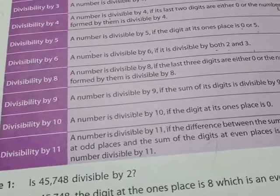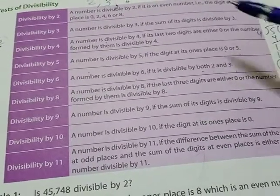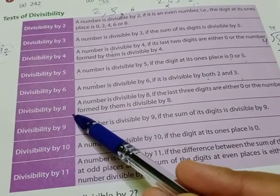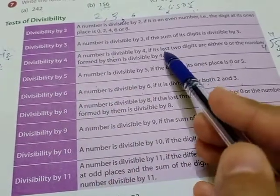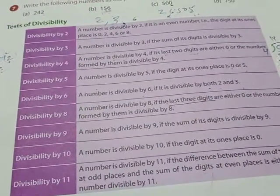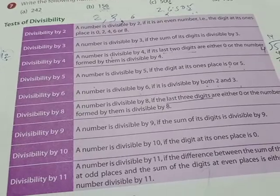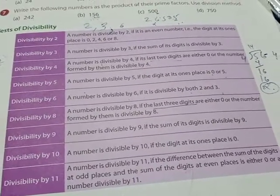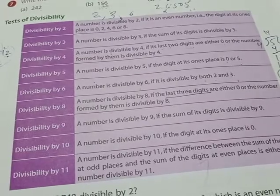Now for divisibility by 8: the rule is similar to the rule for 4, but instead of the last two digits, we look at the last three digits. If a number's last three digits are 000, or when you divide the last three digits by 8 and get no remainder, then 8 is considered a factor of that number.